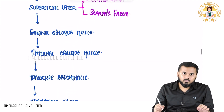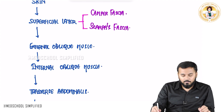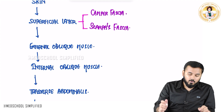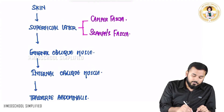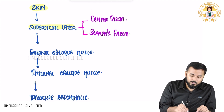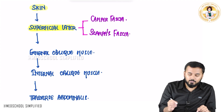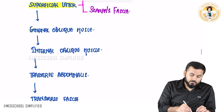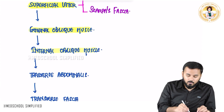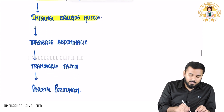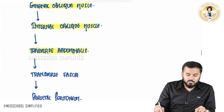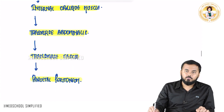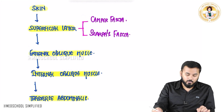So these are the layers from outside to inside: skin, then superficial fascia dividing into two — the outer Camper's fascia and the inner Scarpa's fascia — then the external oblique muscle, internal oblique muscle, and transversus abdominis — these three are the muscle layers — followed by the transversalis fascia and the parietal peritoneum. These are the layers located in the abdomen.